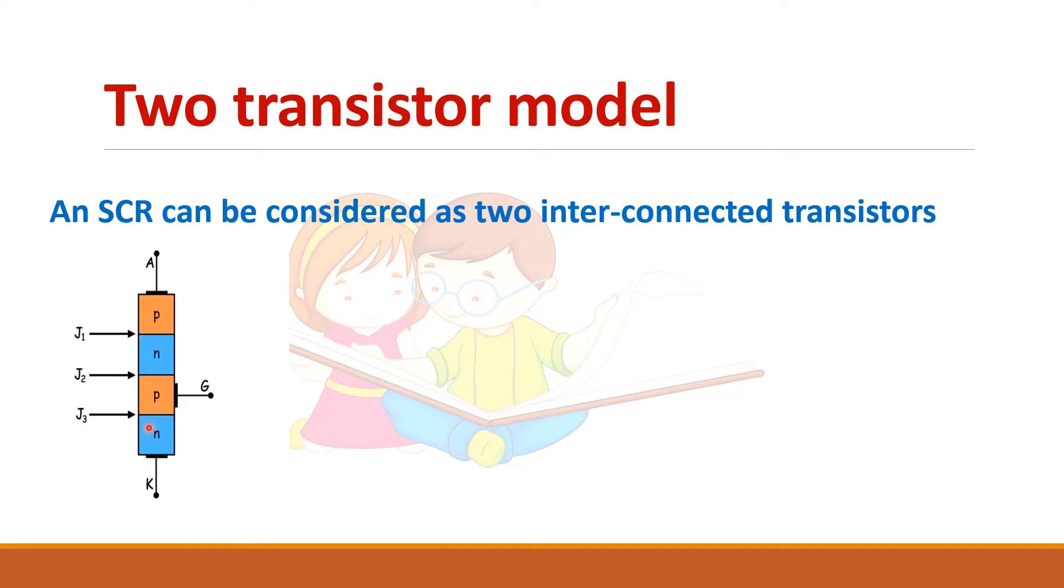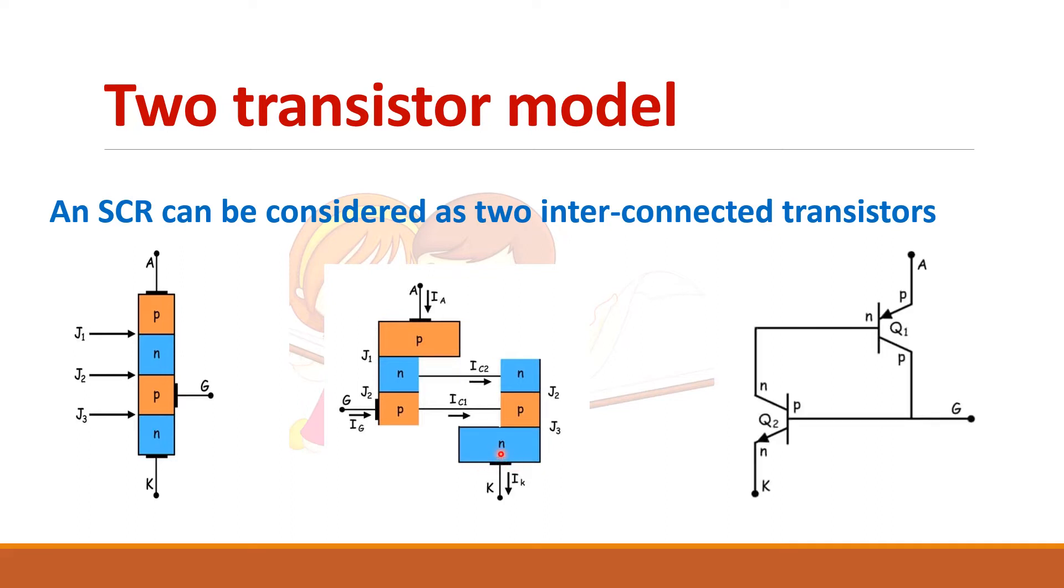So this four layer can be split up into two parts so that you will get two transistors, a PNP transistor and an NPN transistor. So you can see that the gate is connected to both the transistors Q1 and Q2.